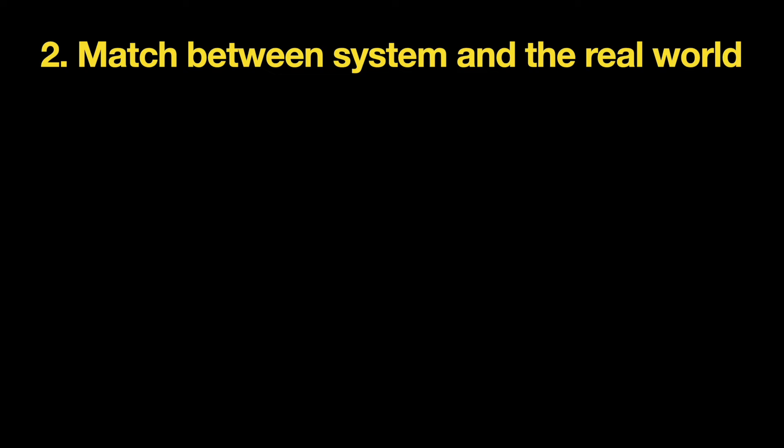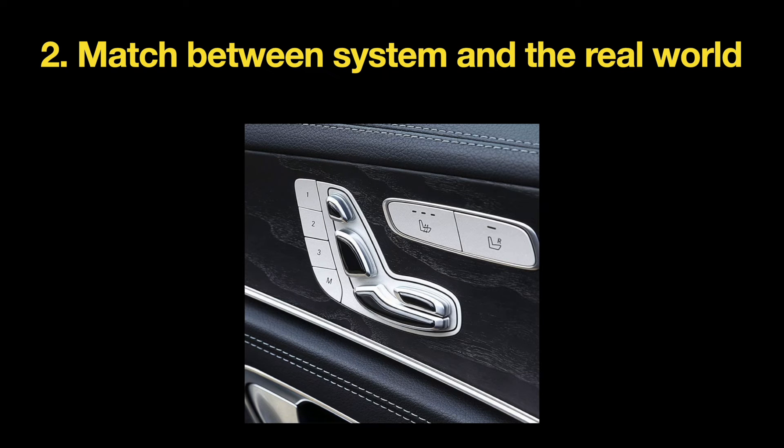The second heuristic is match between system and the real world. The system should use language that is easy for your users to understand. Terminology, concepts, and metaphors used in digital products should be natural to your users. Identify places in your app that can cause confusion — confusion can be caused by unfamiliar terms or unfamiliar concepts. Avoid jargon and rely on analogies from the real world. For example, Mercedes uses a metaphor of a physical chair for their power seat adjustment controls, helping passengers understand how to adjust the seat.